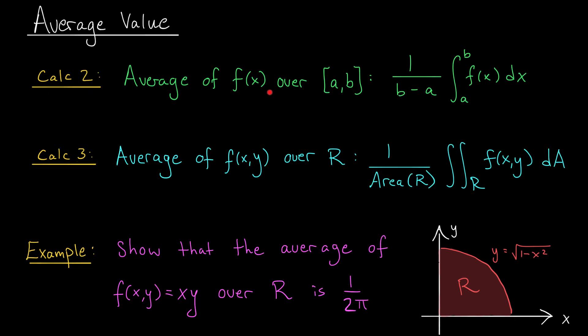This is exactly how you may have computed averages back in calc 2. If you wanted to know the average value of a single variable function over some interval [a,b], well, you added up or integrated the values of that function between a and b, and then divided by the total amount. You divided by the length of the interval b minus a.